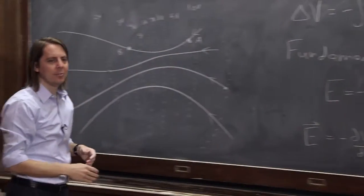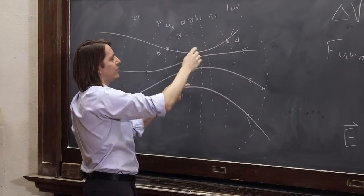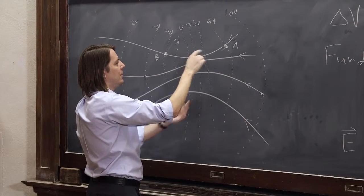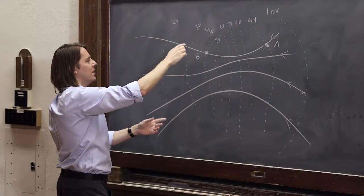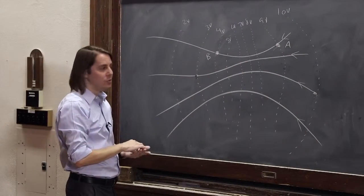And then here, where the field gets big, we have a higher vector flux. We have a lot of field going through this area. Then I made the spacing smaller. And then when the field gets weak again, I made the spacing bigger. So equipotential lines should do that.